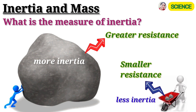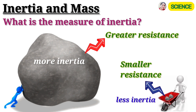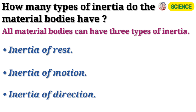In other words, we can say that the mass of a body is a measure of its inertia. Now, there are three types of inertia: inertia of rest, inertia of motion, and inertia of direction.